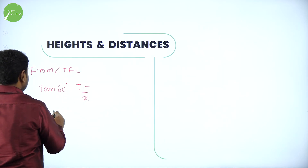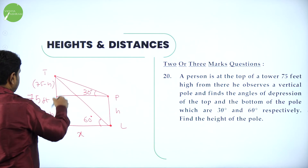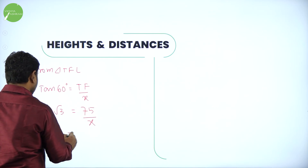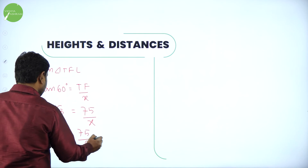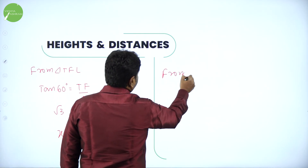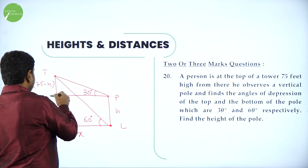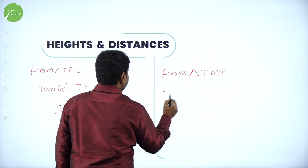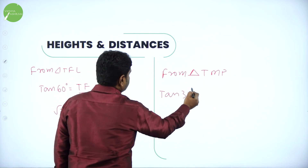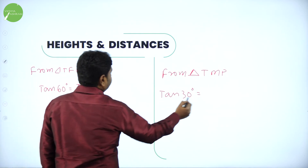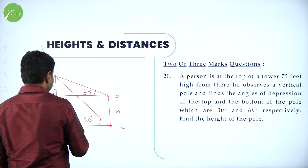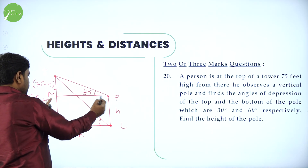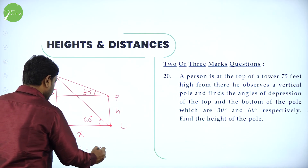From triangle TFL, tan 60 degrees equals TF divided by FL, where FL is the horizontal distance x. Tan 60 is root 3, and TF is 75 feet, so root 3 equals 75 over x. Therefore x equals 75 over root 3.